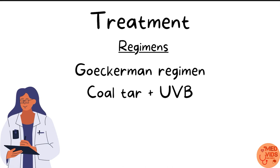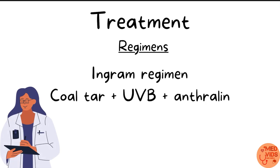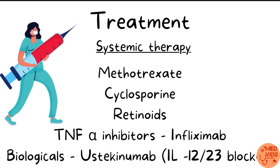A further advanced regimen is the Ingram regimen, where coal tar and ultraviolet B rays are combined with another topical drug, anthralin. Systemic therapy involves drugs taken by injection or oral route. Commonly used systemic drugs include methotrexate, cyclosporine, retinoids, TNF-alpha inhibitors like infliximab, and biologicals like ustekinumab, a monoclonal antibody that is an interleukin-12/23 blocker.